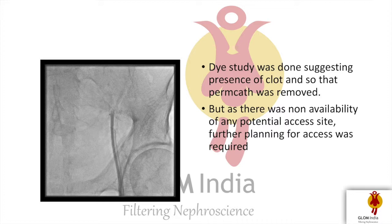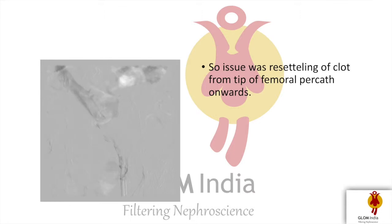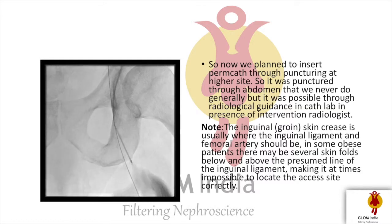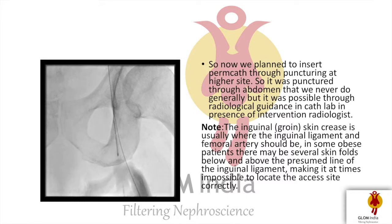As there was non-availability of any other potential vascular access site, further planning for access creation was done immediately. The issue was re-settlement of clots near the tip of the femoral tunneled catheter. So the plan was made to puncture at a higher site — to avoid that segment of the femoral vein where the clot was present due to the previous temporary dialysis catheter. However, to puncture at a higher site, the puncture point was through the abdominal wall, which is not generally done but becomes possible with radiological guidance in the cath lab.